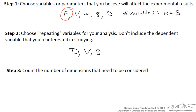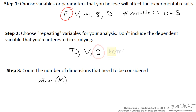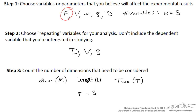The third step is to count the number of dimensions that we need to consider. We have dimensions of mass — for example, density has mass in the numerator, kilograms per cubic meter. We have length, because it describes the diameter. And we have a dimension of time — velocity is length per unit time. So we have three dimensions; r, the number of dimensions, is 3.